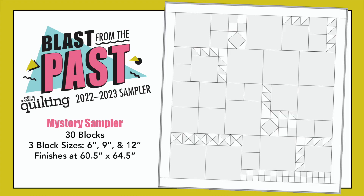We'll release new blocks on the first Friday of each month, share a tips video, and also show the blocks in some alternate colorways. The quilt finishes at 60 and a half by 64 and a half and is set in an asymmetrical design. It uses 6, 9, and 12 inch blocks, and will feature a variety of techniques.